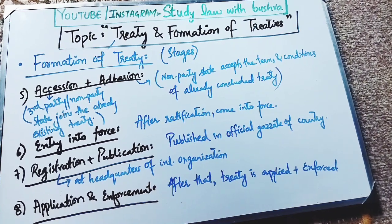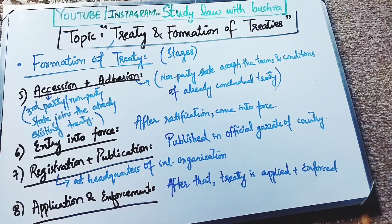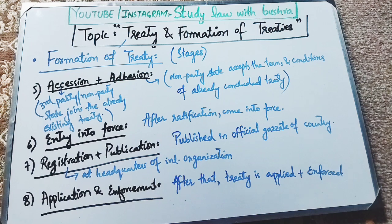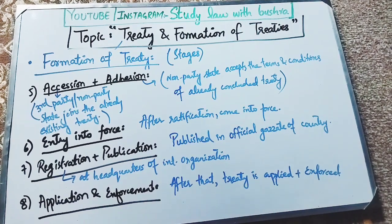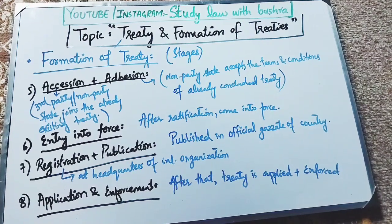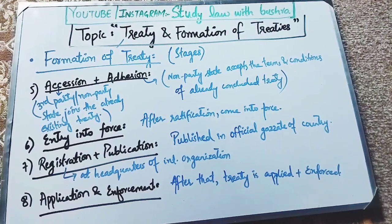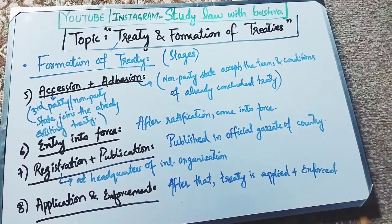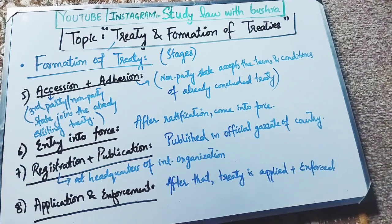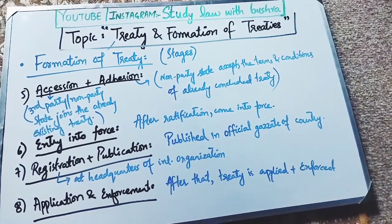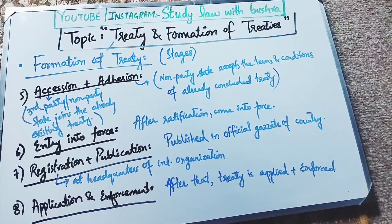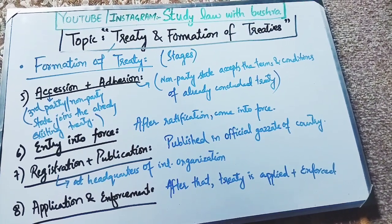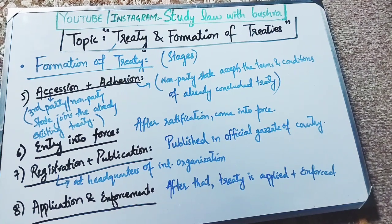Where is an international treaty registered? It is registered at the headquarters of the international organization. Every international treaty, after registration, is published in the official gazette of the country. Article 102 of the United Nations states that registration and publication is necessary, and if any treaty is not registered and published, then such treaty provisions cannot be implemented on United Nations organs. After this entire process and publication, that treaty is then applied and enforced.